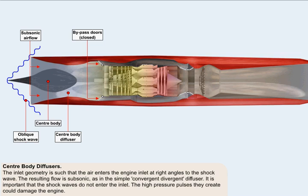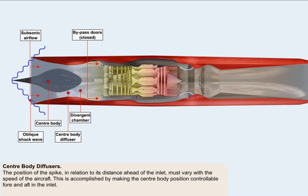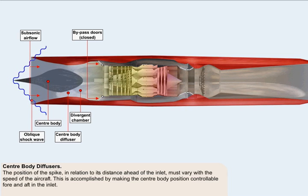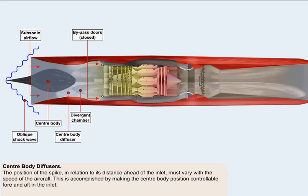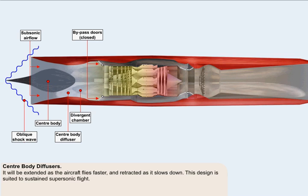It's important that the shockwaves do not enter the inlet because the high-pressure pulses they would create could damage the engine by causing the rotor blades and stator vanes in the compressor to flex. A divergent chamber then slows the airflow further before it reaches the compressor. The position of the spike in relation to its distance ahead of the inlet must vary with the speed of the aircraft. This is accomplished by making the centre body position controllable fore and aft in the inlet. It will be extended as the aircraft flies faster and retracted as it slows down.